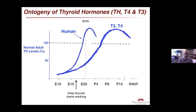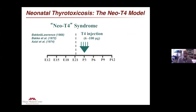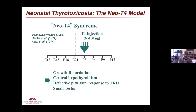It's been known that thyroid hormones are important for many developmental processes, but the consequences of having too much thyroid hormone during development have not been as well studied. About 45 to 50 years ago, some investigators studied what was later called the neonatal T4 model, in which they injected rats with really large amounts of T4 for a few days after birth. They found that these animals had growth retardation and developed abnormal thyroid axis physiology with central hypothyroidism and a defective pituitary response to TRH.